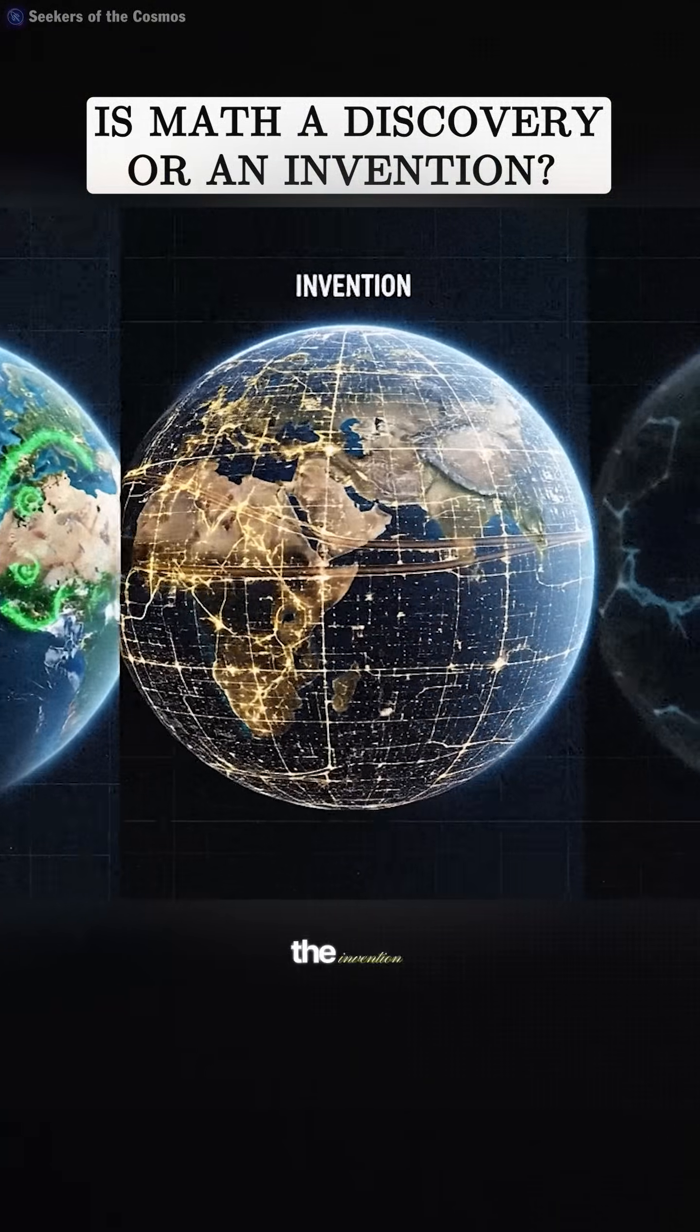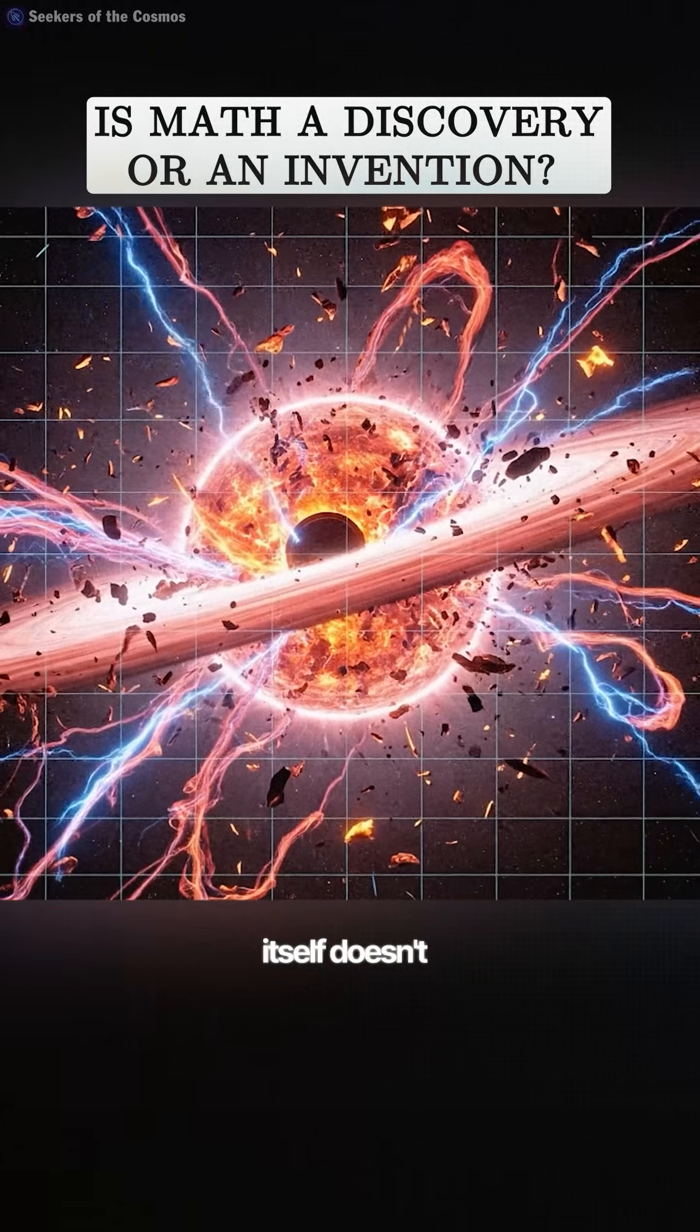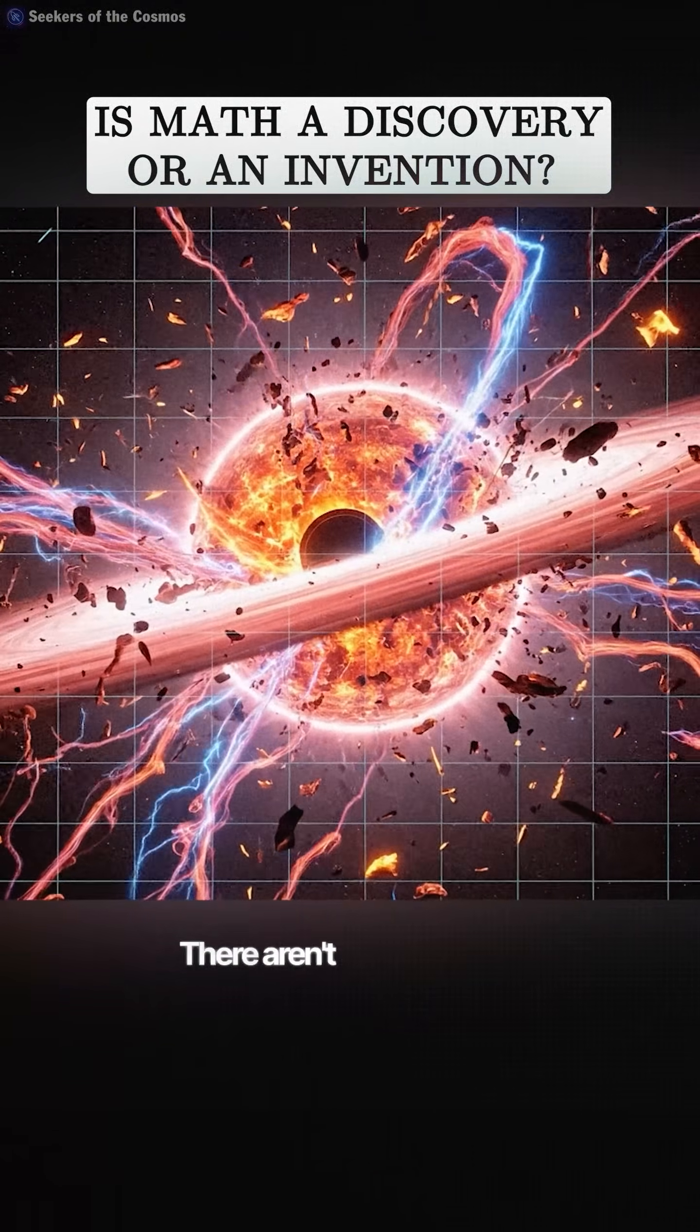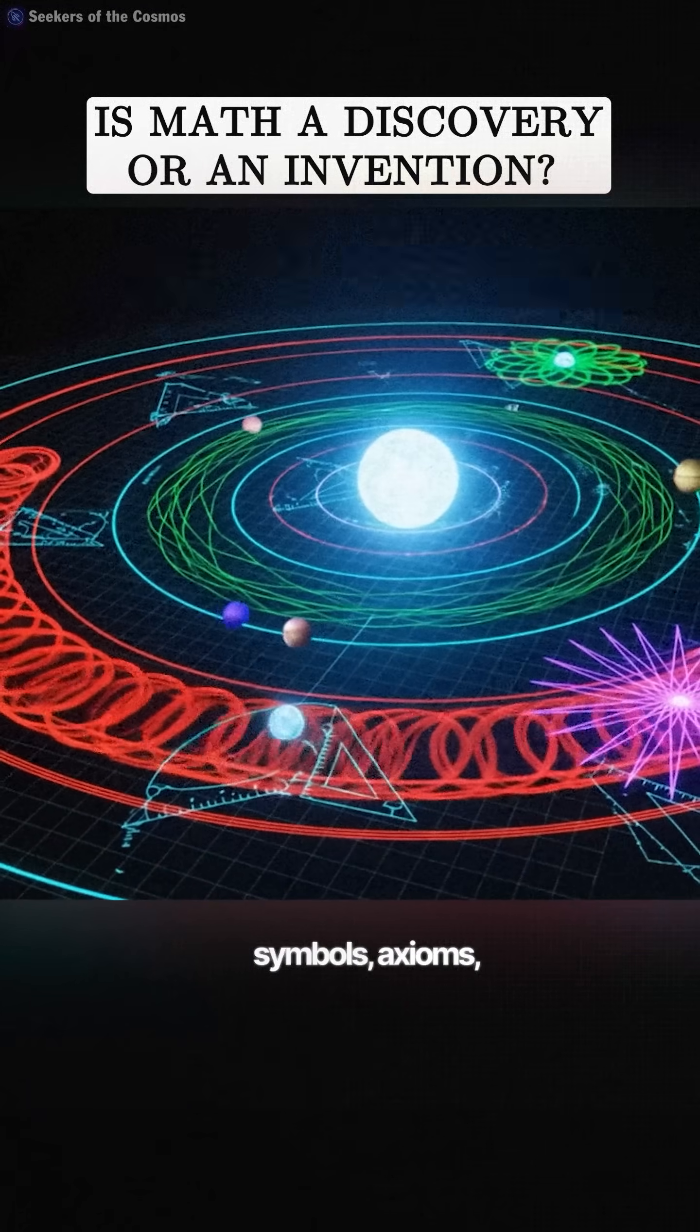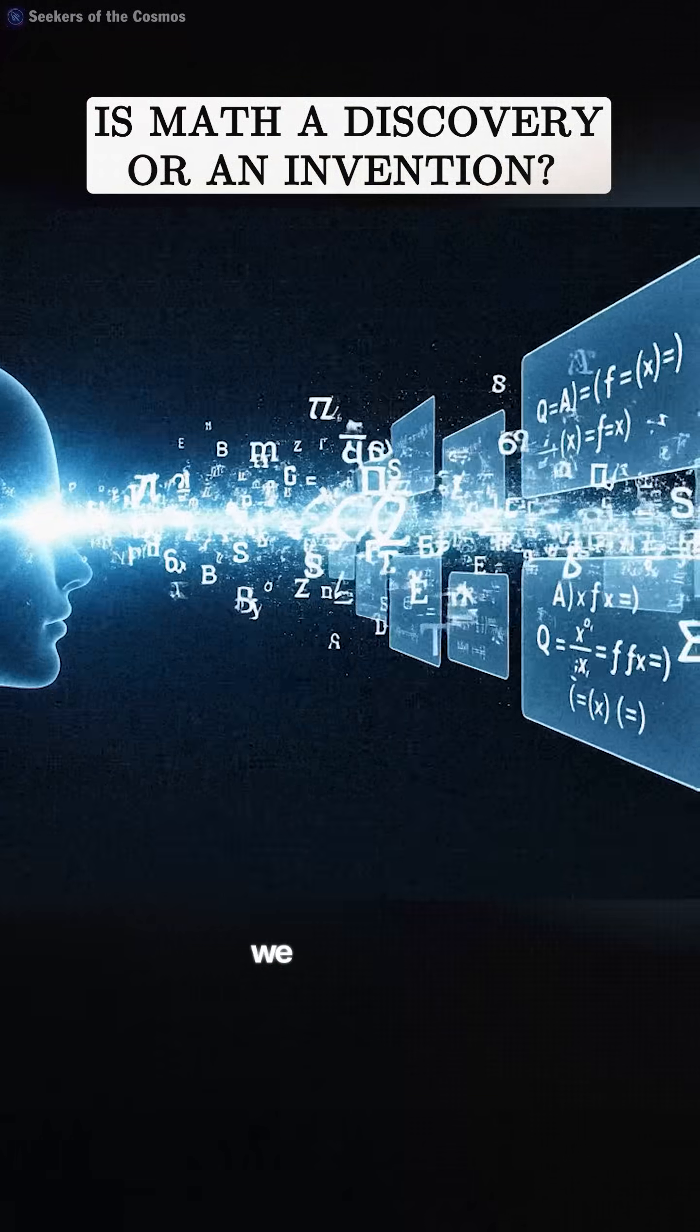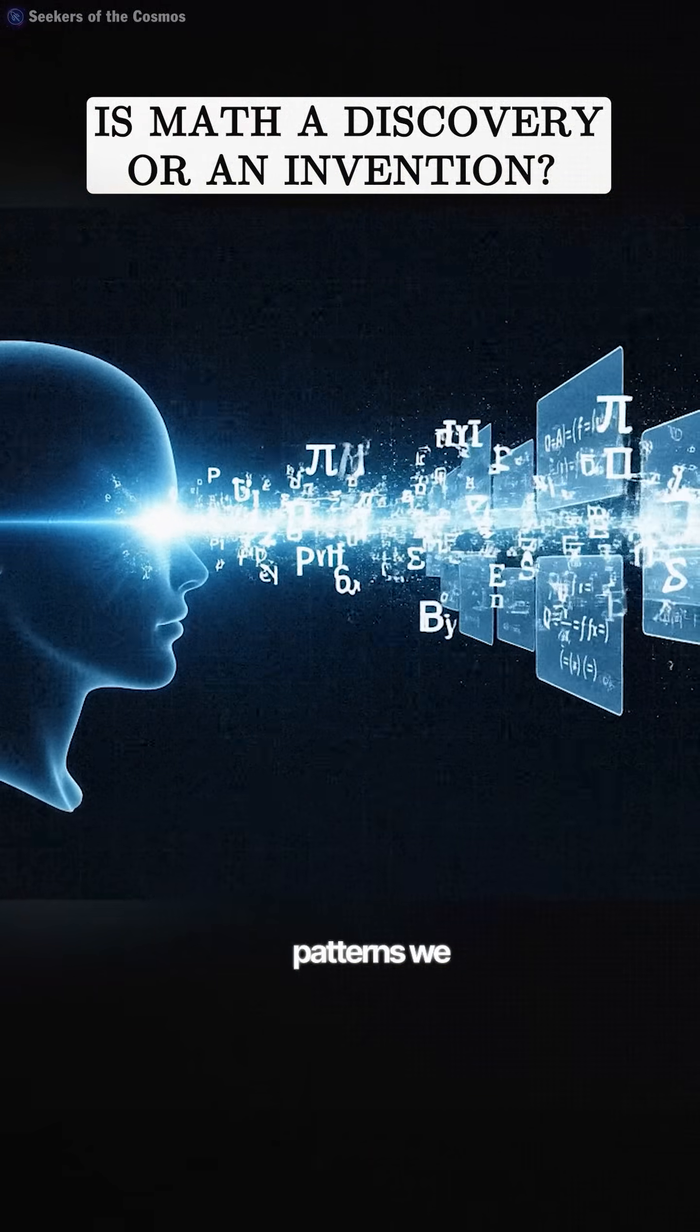But then there's the invention argument. This side says the universe itself doesn't do math. There aren't little numbers floating around in space. Mathematics, with its symbols, axioms, and theorems, is a language that we invented to describe the patterns we observe.